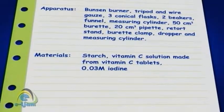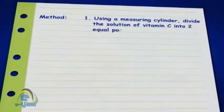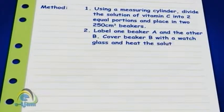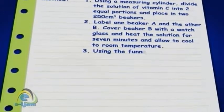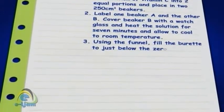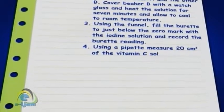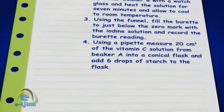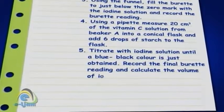The next step is to write the method. This should be written in the present tense since the investigation has not yet been carried out. You are not to use pronouns and it should be written in a logical sequence with all the steps required to carry out the investigation.